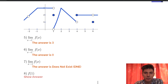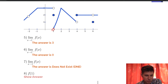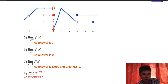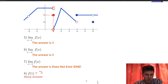The last question in this set is f of 1 — what is the function value at 1? There's a hole here and also a hole here, but there's a nice filled-in point. So f of 1 is 2. That's the function value at x equals 1.